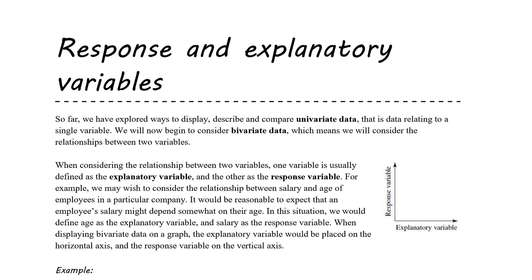In the previous two chapters we've been looking at univariate data, where we have a single data set — or data relating to a single variable. Now we're going to start to look at bivariate data, where we're comparing two variables and trying to look for associations or correlations.